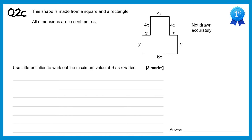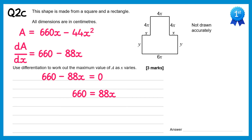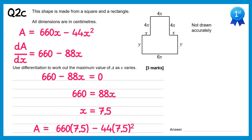For this final part we need to find the maximum value of A so we need to differentiate. So dA by dx: 660x differentiates to give 660 and minus 44x squared differentiates to give minus 88x. We know this needs to equal 0 at the stationary point, so 660 minus 88x equals 0. Add 88x to both sides then 660 equals 88x, and divide by 88 on both sides then x equals 7.5. Substituting back in: A equals 660 times 7.5 minus 44 times 7.5 squared, which gives 2475 centimeters squared.